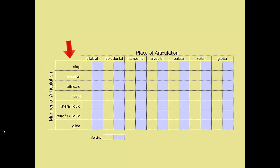The rows indicate the manner of articulation, or the way that you produce the sounds: stops, fricatives, affricates, nasals, the liquids lateral and retroflex, and the glides. I'll give samples of all of these shortly when we start looking at the IPA symbols. Voicing is indicated by the shading of each column. Many speech sounds have both voiced and voiceless versions. The shaded portion to the right indicates a voiced consonant, while the non-shaded area to the left indicates voiceless consonants.